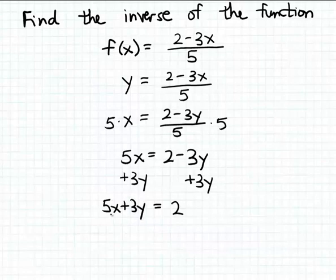And now to move the 5x over to the right hand side, I'm going to subtract 5x from both sides of the equation. So we end up here with 3y is equal to 2 minus 5 times x.